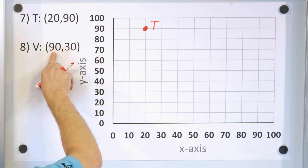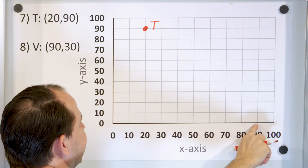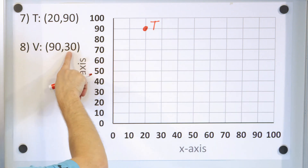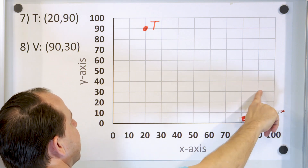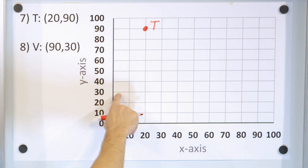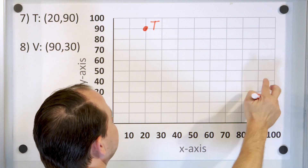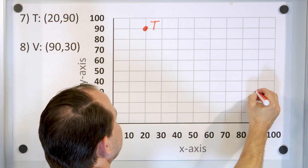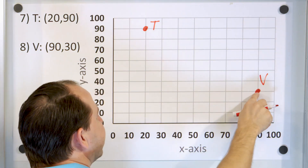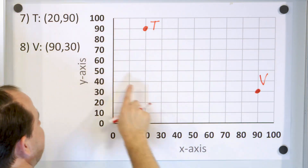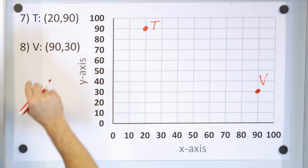Finally, our last point V has x equals 90, which is right here. Then y equals 30, so we count up 10, 20, 30. Notice the y value is 30 and the x value is 90, so the point is right here. The label is V. You can check yourself: x is 90 and y is 30.